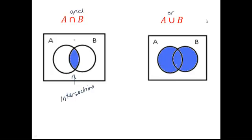Whereas this means anything that's in A or B, and we call this the union of A and B. That's anything that could be in A or B.